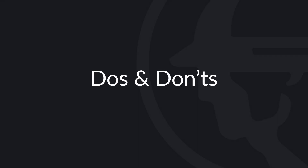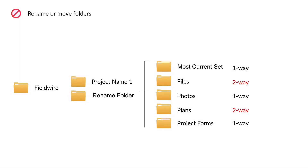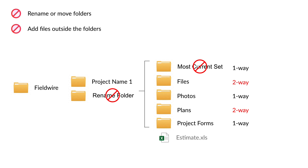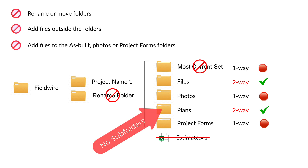In order for Two-Way Sync to work properly, there are a few important do's and don'ts to follow. Do not rename or move folders on the cloud storage platform. Do not add files outside the folders created by Fieldwire. Do not add files to the As-Builds, Photos, or Project Forms folders as they are one-way sync only. Do not create subfolders in the Plans folder.